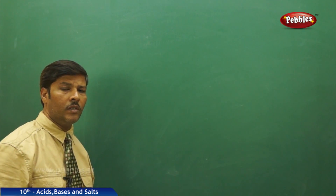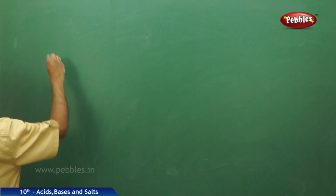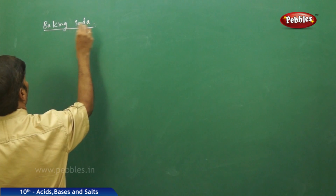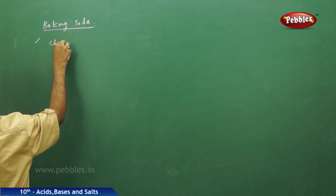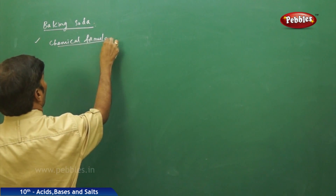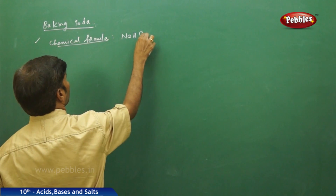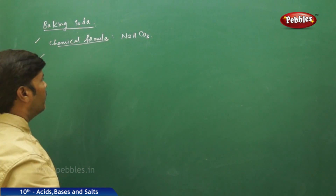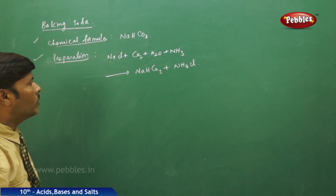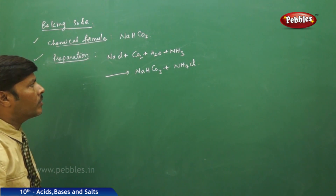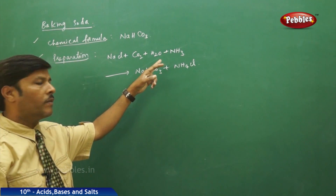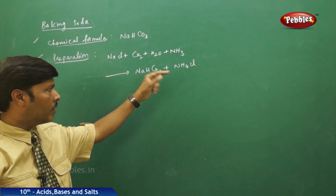The next part of the discussion in this chapter is baking soda. The chemical formula of baking soda is sodium bicarbonate (NaHCO₃). In the preparation of baking soda, we take sodium chloride and treat it with carbon dioxide, water, and a sufficient amount of ammonia. This gives sodium bicarbonate and ammonium chloride.